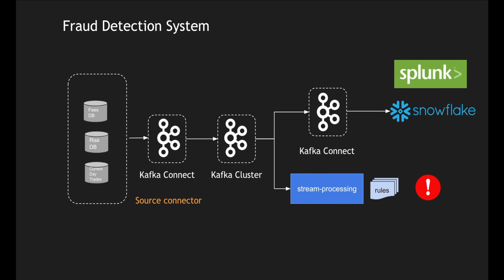Looking at Kafka Connect usage within the system, there are two different types. One which takes data from a data source and copies it into a Kafka cluster is called a source connector. The one which copies from the Kafka cluster and persists back into a data store is called a sink connector. You can think of them as source and destination, but Kafka uses the terms source and sink.